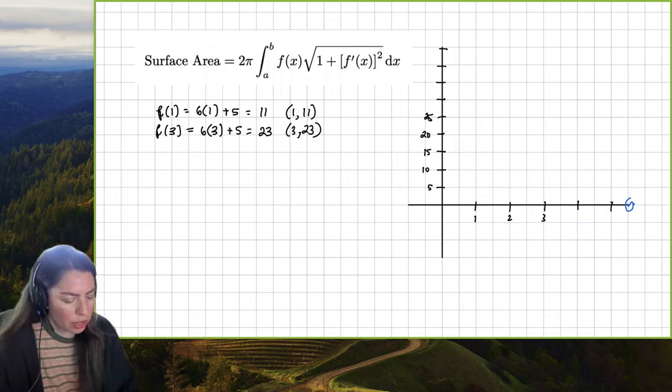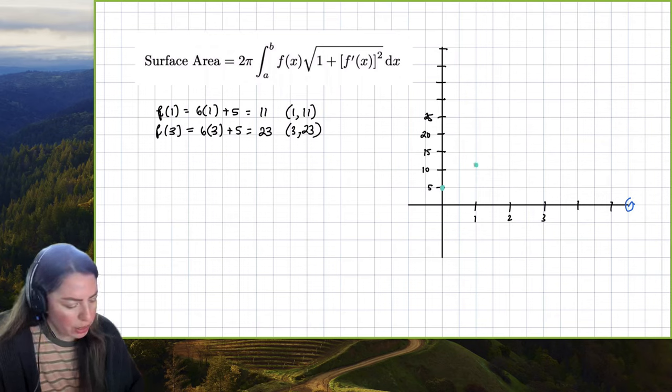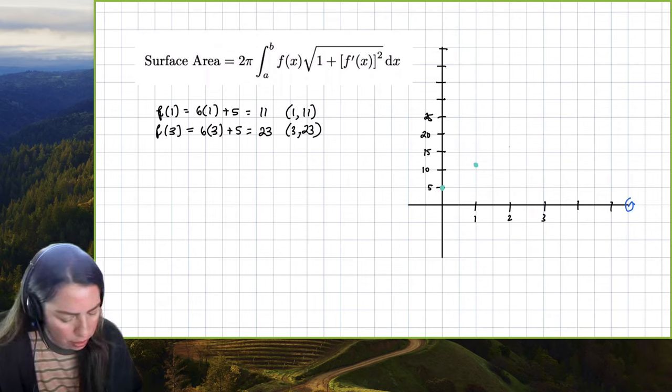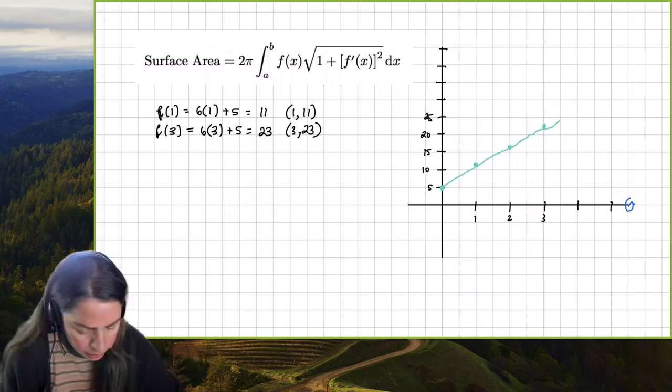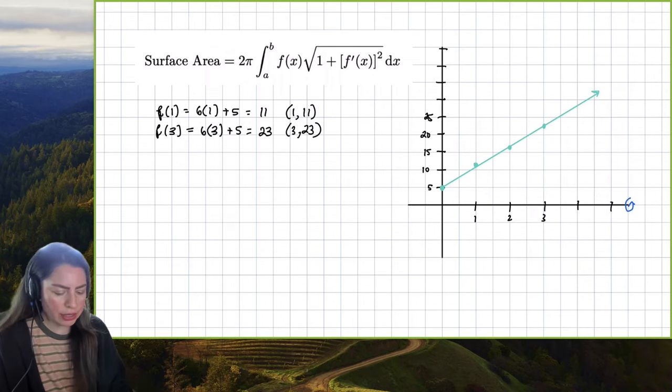Here we're gonna go ahead and put in we could do 0, the y-intercept at (0,5), and then up 6 over 1 so that would be (1,11). We could do it for 2: 6 times 2 is 12, 12 plus 5 is 17 so we could do it right there and then we can see that (3,23). And then I would go ahead and just connect the dots and I'm using notability so the line straightens out for me.